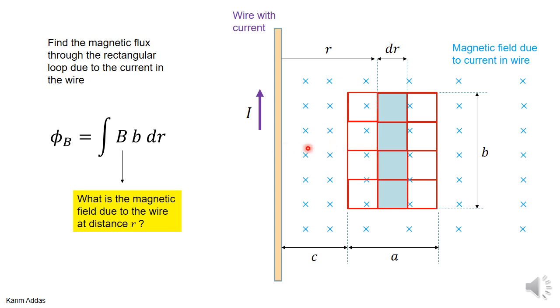And then the magnetic field—we know what the magnetic field is for any point a distance r away from the wire. The field has a value μ₀I over 2πr. We derived this before for an infinite wire. So if you put that in the equation, you get this integral.